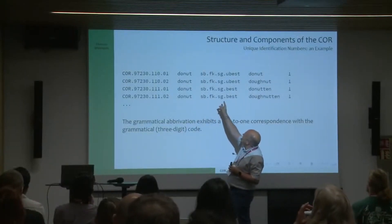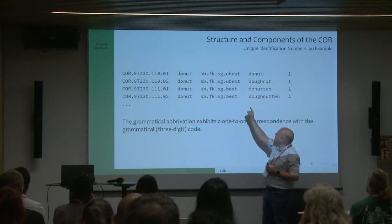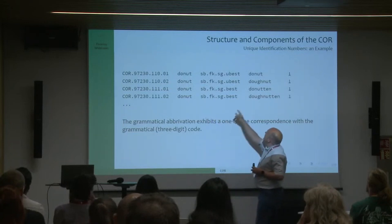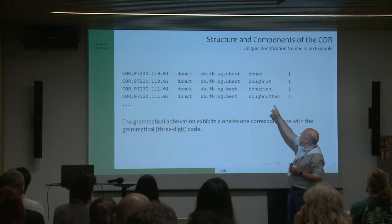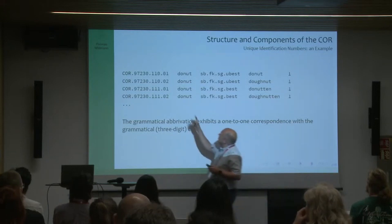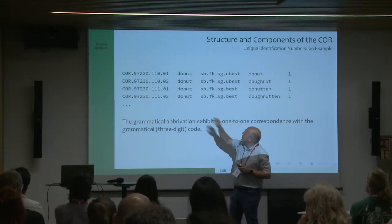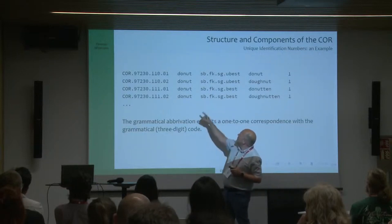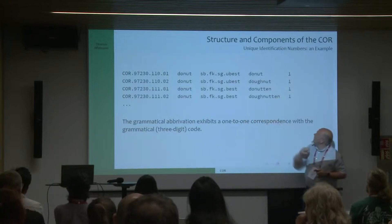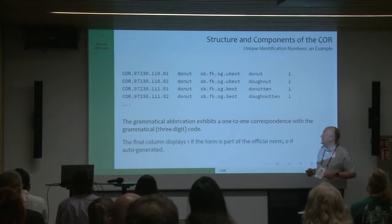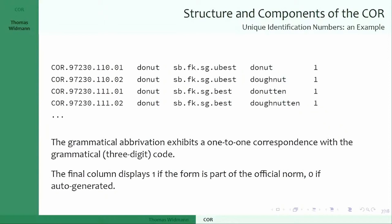For the first form, 'sb' means noun, 'fk' is common gender, 'sg' is singular, 'ubist' is indefinite. There are two allowed spellings of 'donut' — without the 'gh' and one with — and both are perfectly acceptable in Danish. The codes 110 and 111 identify those forms; 110 is indefinite and 111 is the same but definite. A value of 1 at the end means it's proofread as part of the official norm; a zero means it's been generated but not yet proofread, so be careful using those until they're checked.